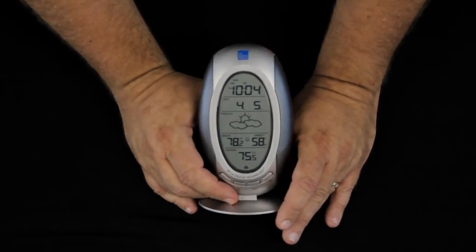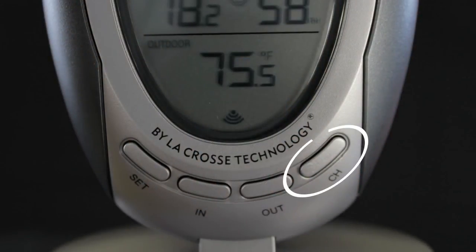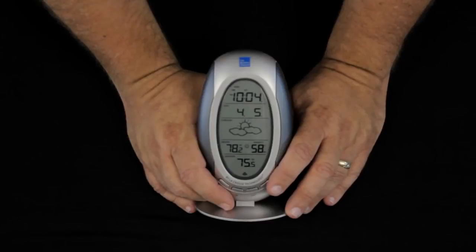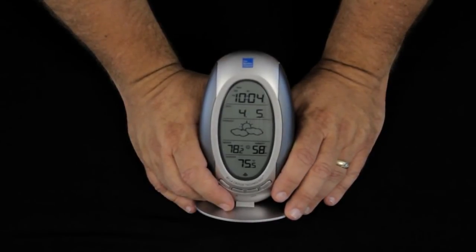This system also can be set up with multiple outdoor sensors. The remote outdoor sensor can be used indoors or outdoors. You can set up up to 3 sensors and monitor different locations, either indoors or outdoors or both.